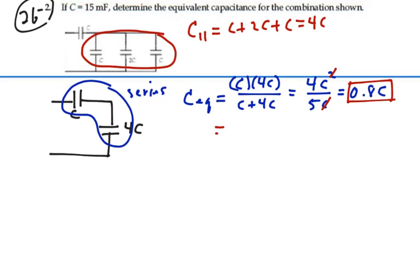Since C is equal to 15 millifarads, we have 0.8 times 15 and that gives us 12 millifarads.